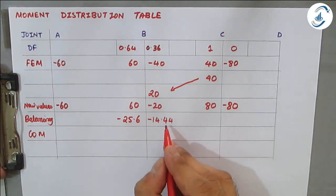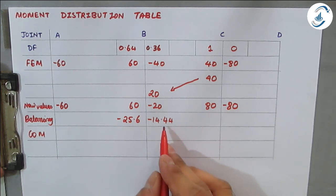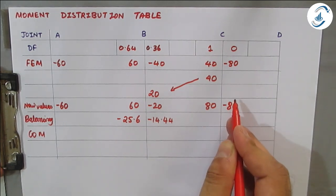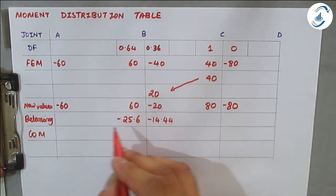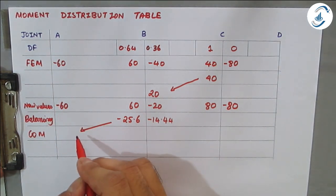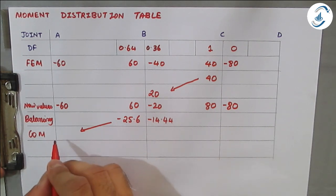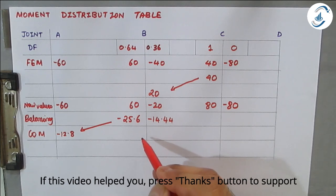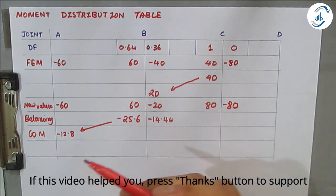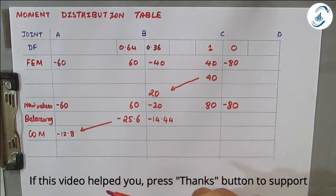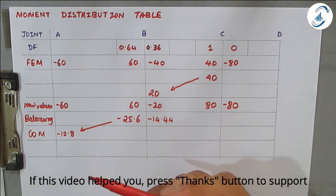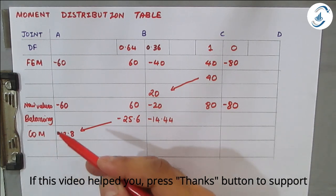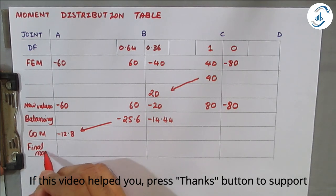For carry-over moments, we do not carry over to the C side because C has already been made zero. Carrying over to the C side would change the values and give incorrect results. Only carry-over from B to A applies: −25.6 / 2 = −12.8 at A. No further balancing is needed at B or C, so the problem ends at the carry-over step.